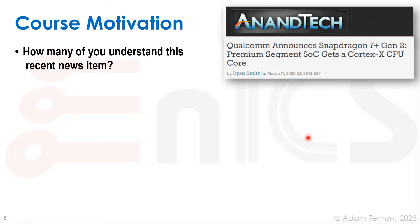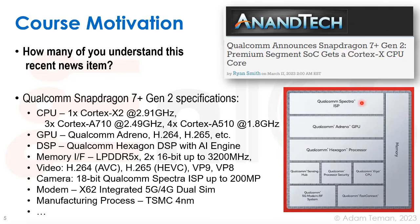So how many of you understand this recent news item? Published in Anandtech just a couple days before I recorded this, it says that Qualcomm announced Snapdragon 7 Plus Gen 2. Premium segment SOC gets a Core X CPU core, and they show pictures of this type of system on chip — the Qualcomm Snapdragon 7 Plus Gen 2 — with a whole bunch of CPUs: one Cortex-X2, three Cortex-A710, and four Cortex-A510 at different speeds.